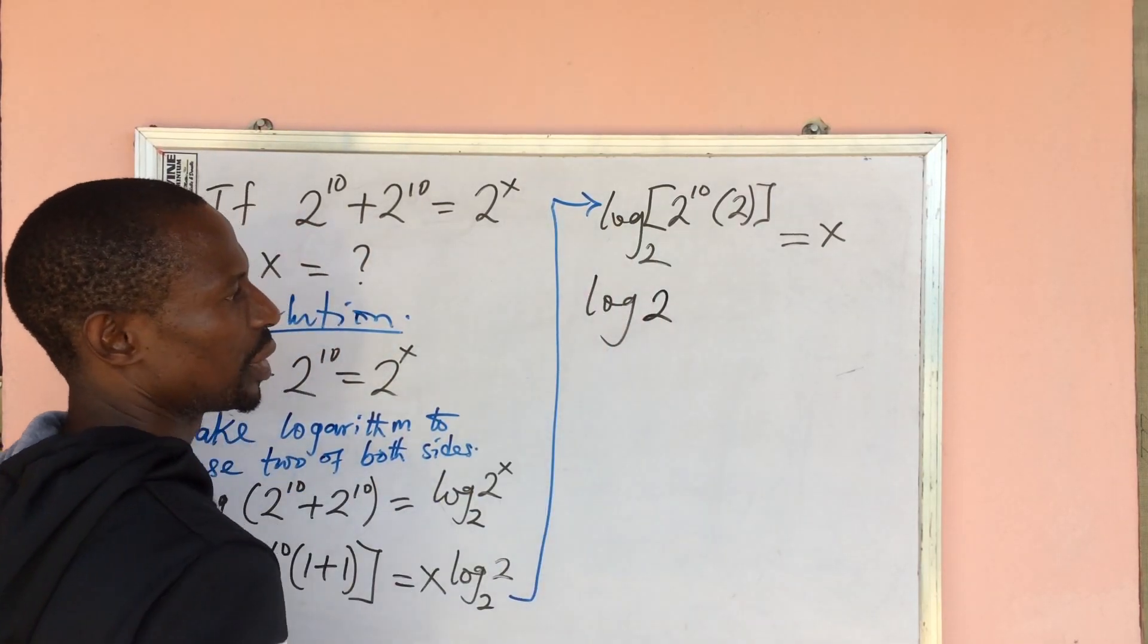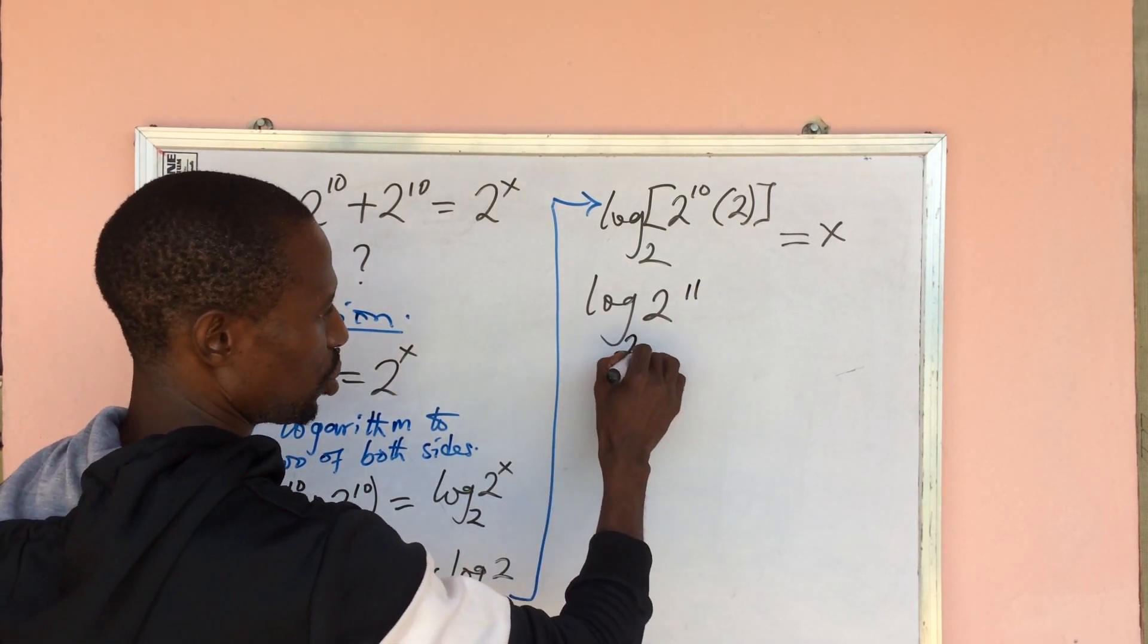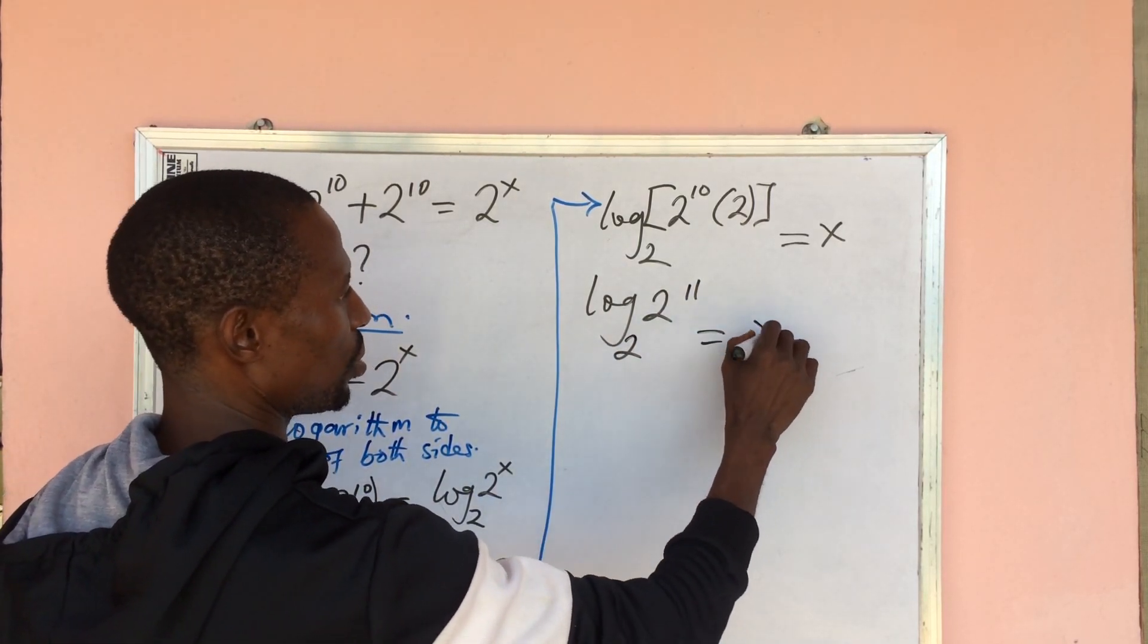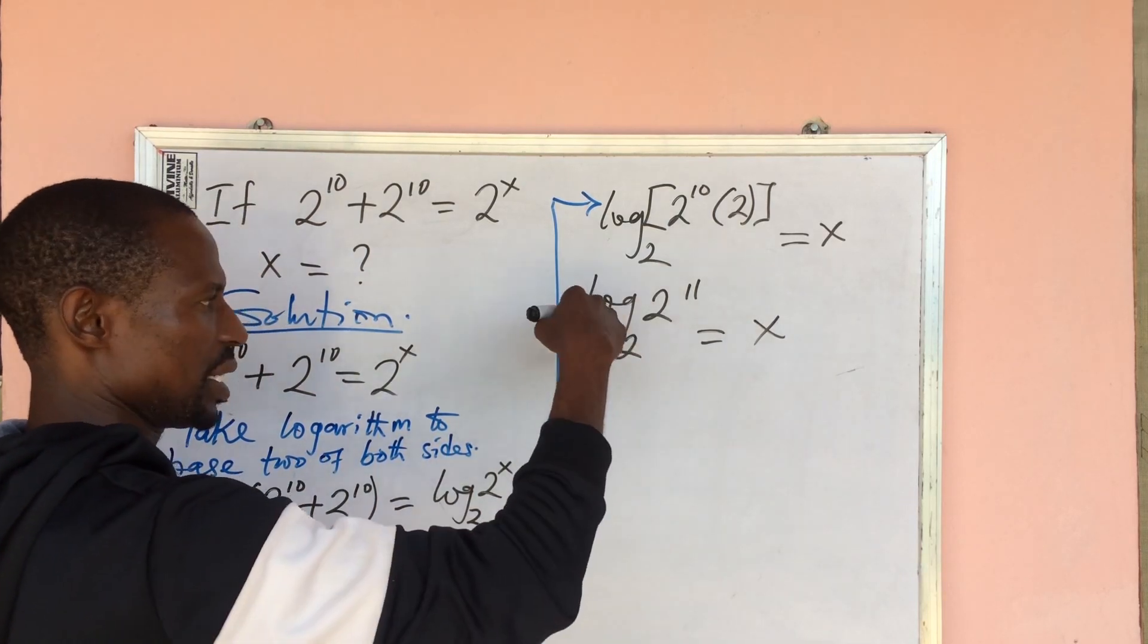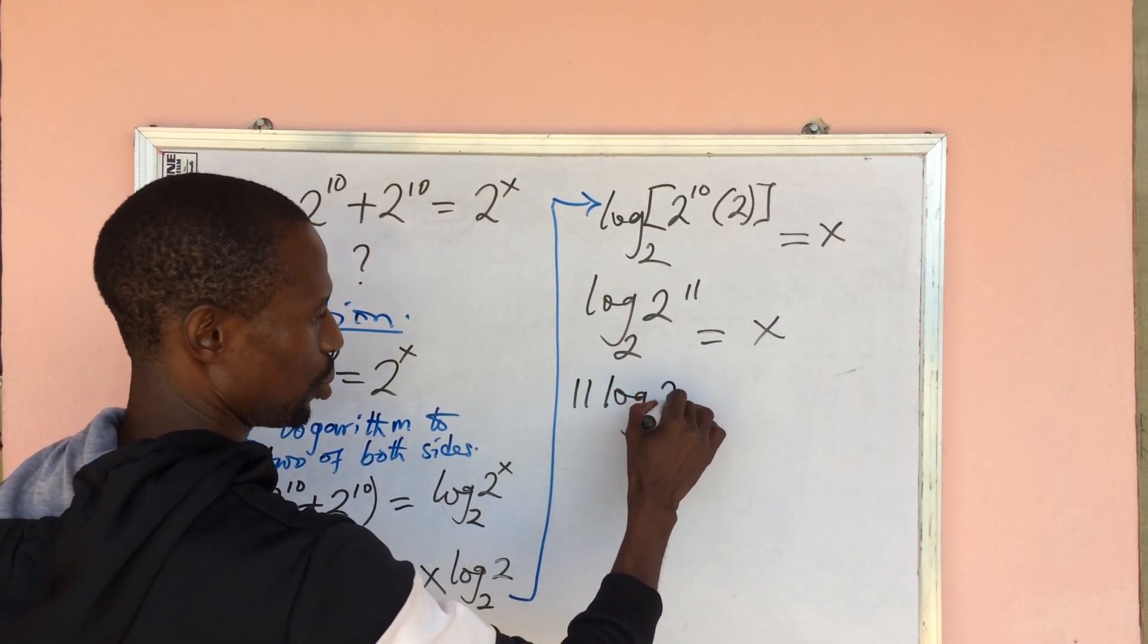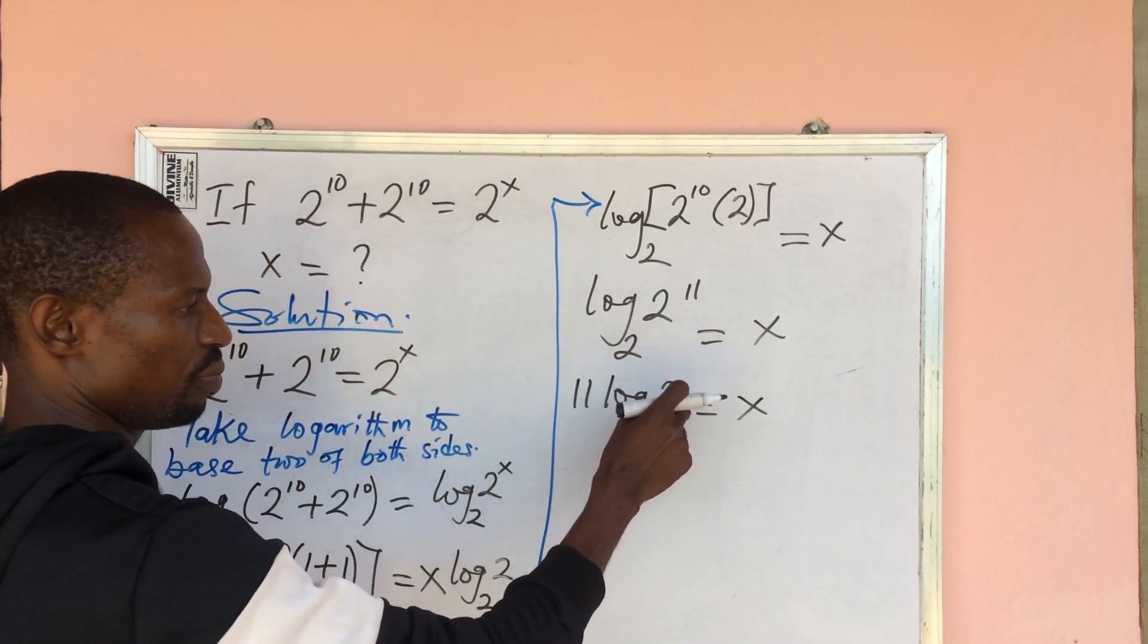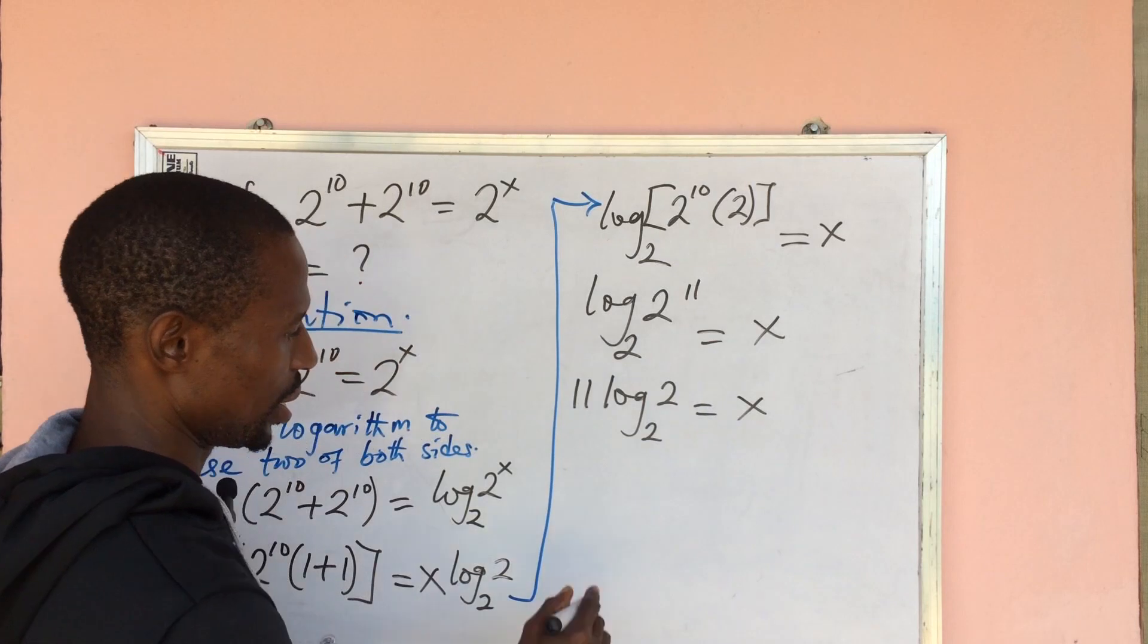Bring this backwards. This will give us 11 log 2 base 2 equal to x, and log 2 base 2 will give us 1, so this will automatically give us 11 equal to x. Therefore, our x is equal to 11, Q.E.D.